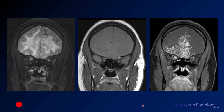On coronal images, the right optic nerve is swollen and T2 bright with nodular areas. Comparing pre- and post-contrast images, you see nodular areas of enhancement — some in the leptomeninges and some appearing to be in the parenchyma.